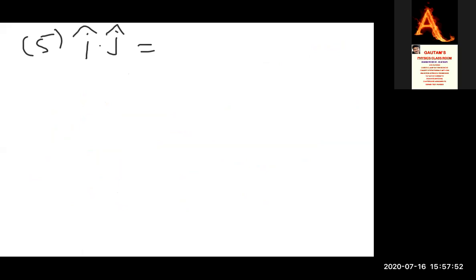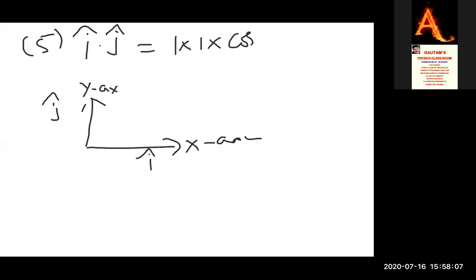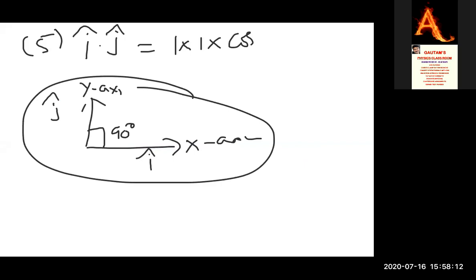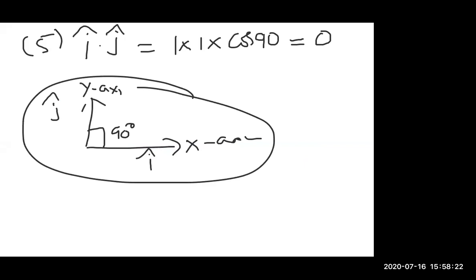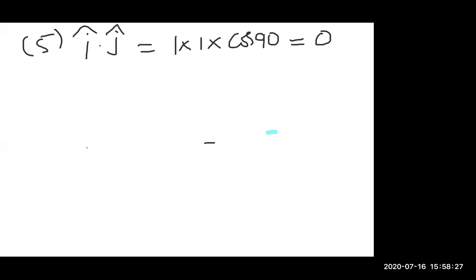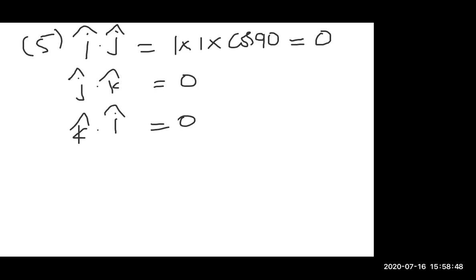Next property: i cap dot j cap. The magnitude of i cap is 1 and j cap is 1, but i cap is along the x-axis and j cap is along the y-axis, so the angle between them is 90 degrees. Cos 90 is 0, so i cap dot j cap equals 0. Similarly, j cap dot k cap equals 0 and k cap dot i cap equals 0, because all pairs of different unit vectors are perpendicular.